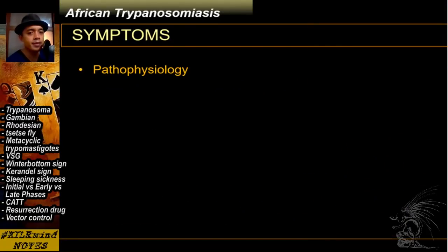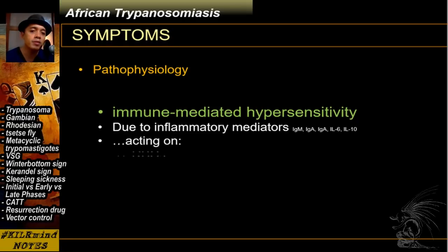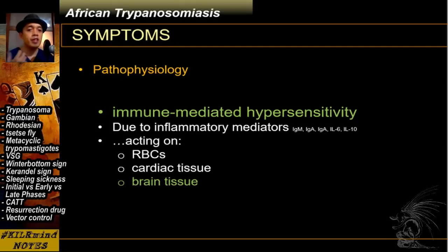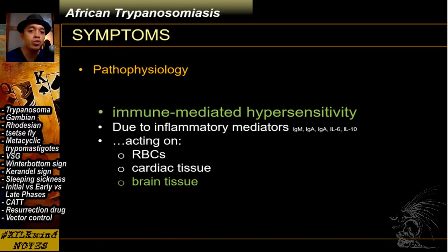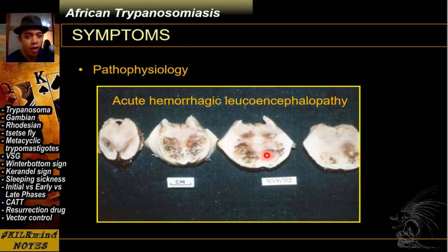The pathophysiology involving human African Trypanosomiasis is primarily immune-mediated hypersensitivity, due to particular inflammatory mediators. These mediators act on the RBCs, on brain, and on heart tissues, which eventually leads to what is termed acute hemorrhagic mucoencephalopathy, wherein there are numerous small and in places confluent foci of hemorrhage throughout the brainstem.